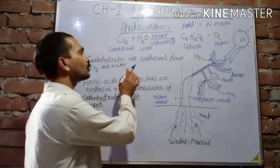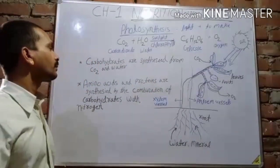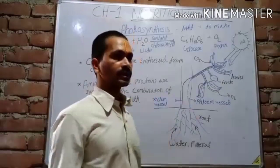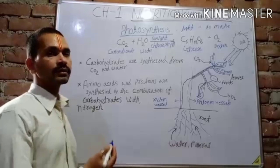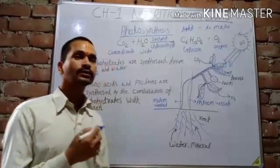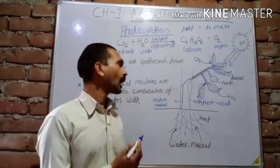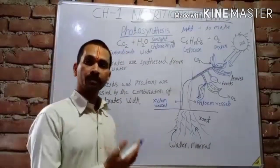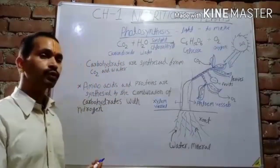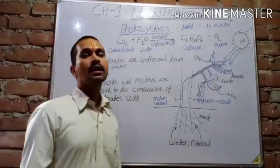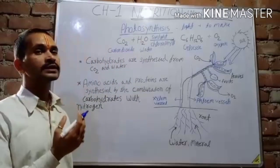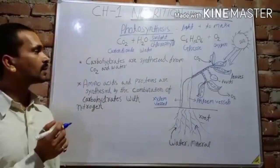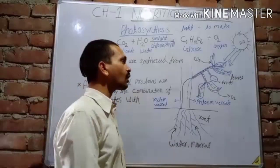Suppose if there is no photosynthesis — meaning if there are no green plants on the earth — then there would be no life on the earth and the earth would be a barren place. Because if there are no green plants, there is no food for human beings and living organisms, and no gas for the survival of any human being or animal. So, photosynthesis is very important for us.